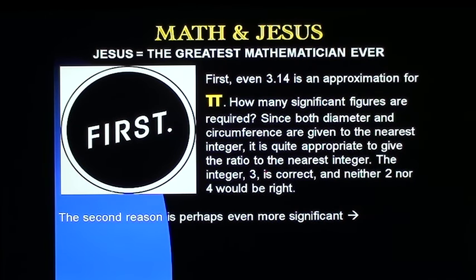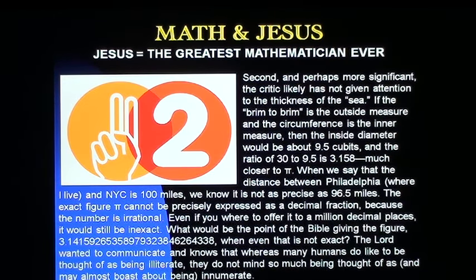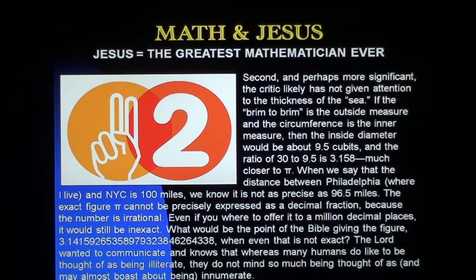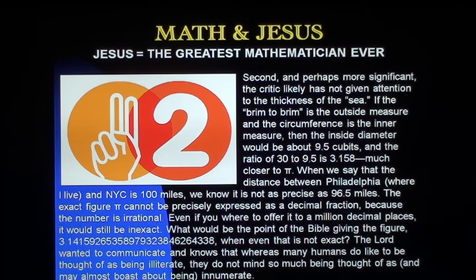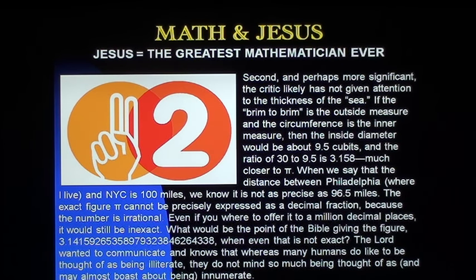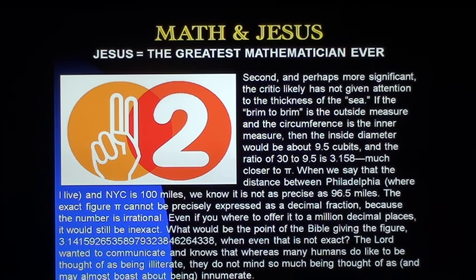The second reason is perhaps even more significant. The critic likely has not given attention to the thickness of the sea. If the brim-to-brim is the outside measure and the circumference is the inner measure, then the inside diameter, subtracting the two handbreadths, would be about 9.5 cubits. And the ratio of 30 to 9.5 is very close to pi — 3.15. If a handbreadth is a different size, you could even perhaps get it closer.